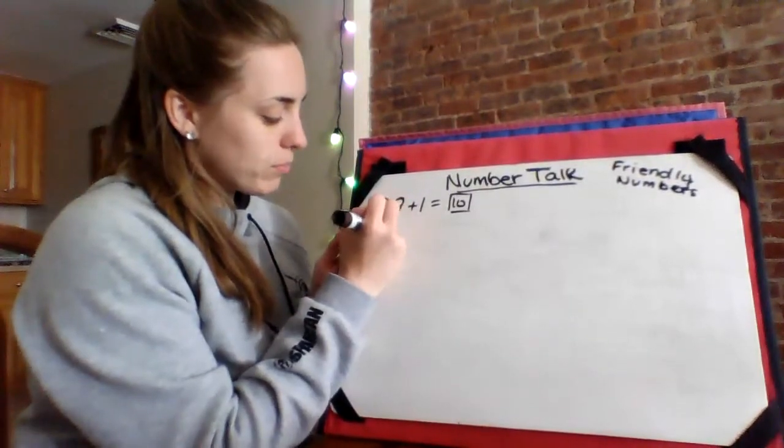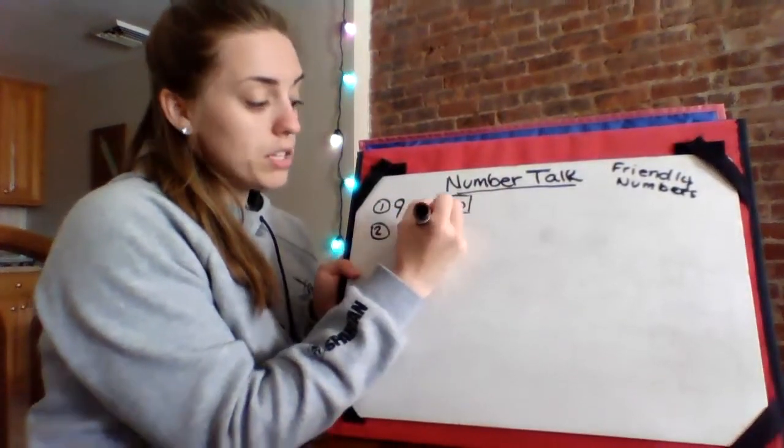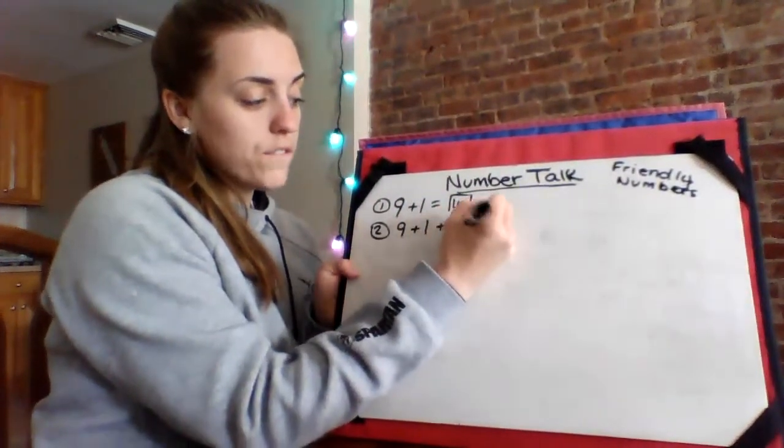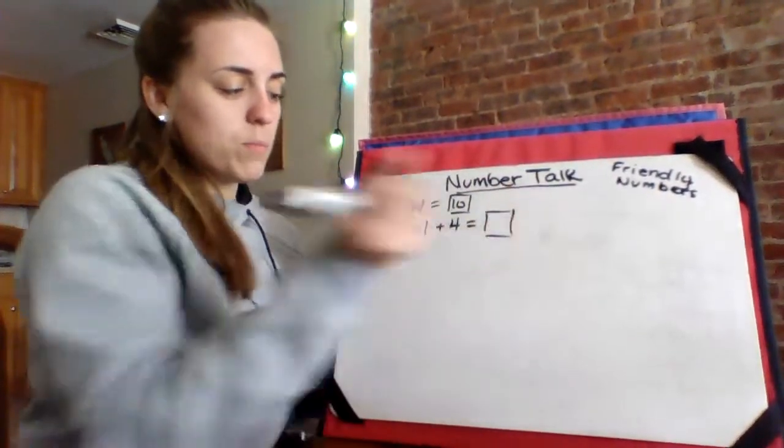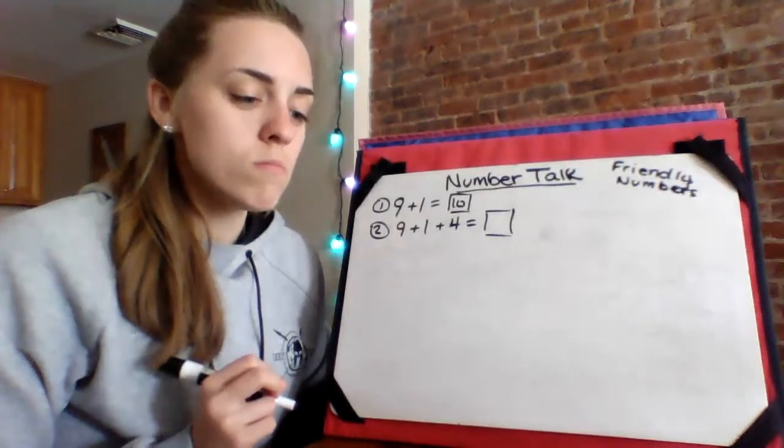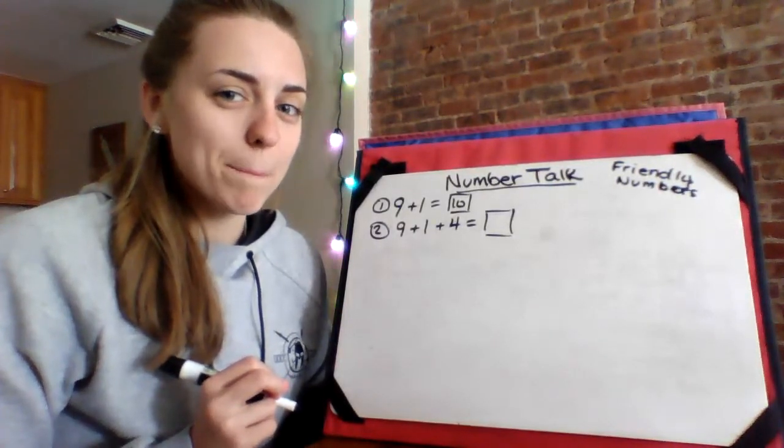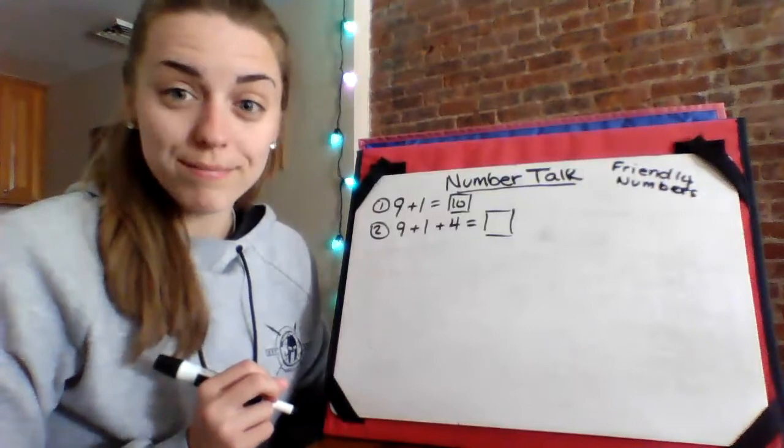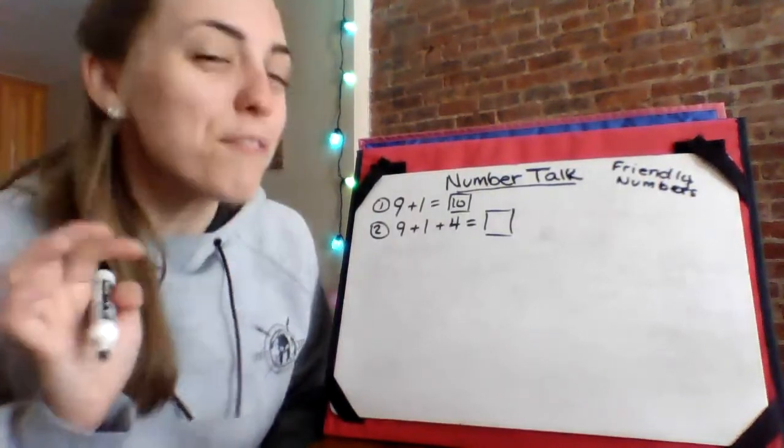Number two. Nine plus one plus four. You got this. I'll give you a couple seconds to think about it. All right, ready? Whisper, shout it. Three, two, one. Fourteen.